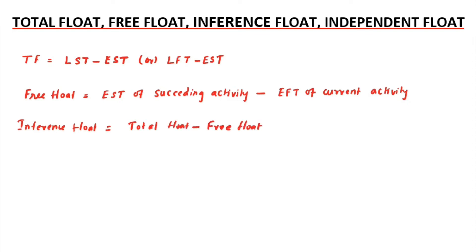Next is independent float. The independent float is the amount of time an activity can be delayed without delaying the project completion, where the starting of the succeeding activity is not delayed by the preceding activity. The formula for independent float is: EST of succeeding activity minus LFT of preceding activity minus current activity duration.